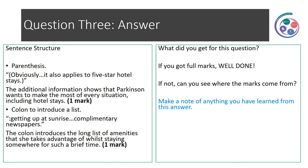Let's have a look at the answer for question three. The first thing you could have written about was parenthesis: 'Obviously, it also applies to five star hotel stays.' The additional information shows that Parkinson wants to make the most of every situation, including hotel stays — that gets the first mark. Then we have the colon to introduce a list: 'getting up at sunrise... complimentary newspapers.' The colon introduces the long list of amenities that she takes advantage of whilst staying somewhere for such a brief time. Make a note of anything you've learned from this answer.